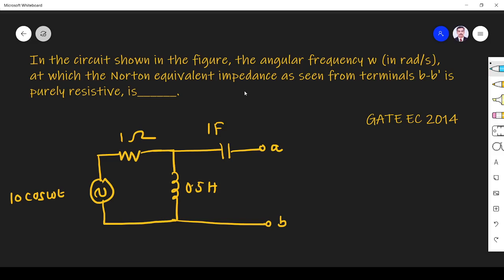...the Norton equivalent impedance as seen from terminals b-b', so it is b-b dash, is purely resistive is dash. Right, so we have to find the angular frequency when the Norton equivalent impedance is purely resistive.